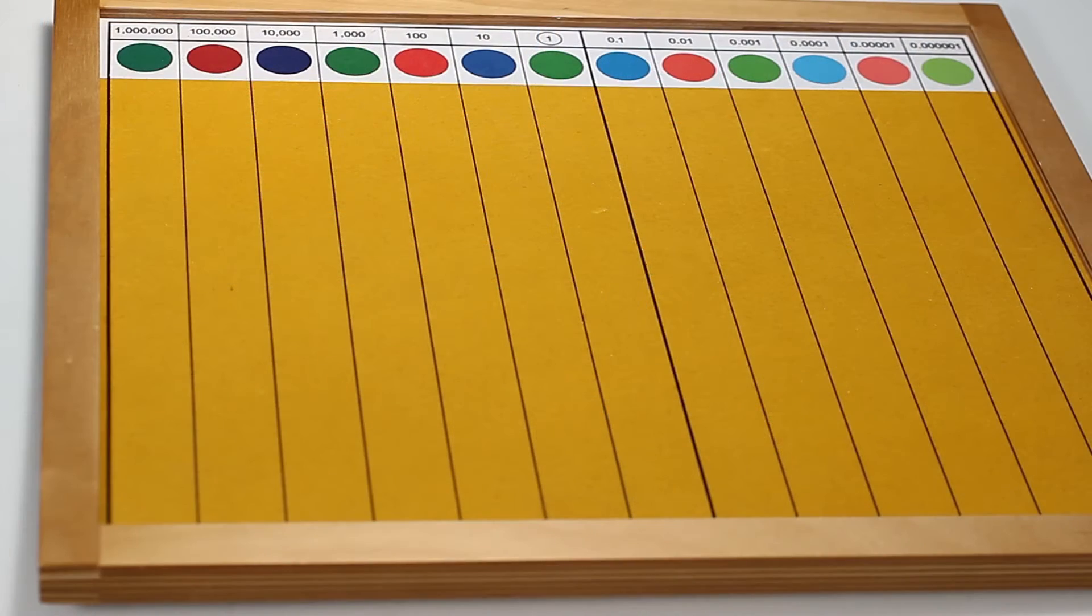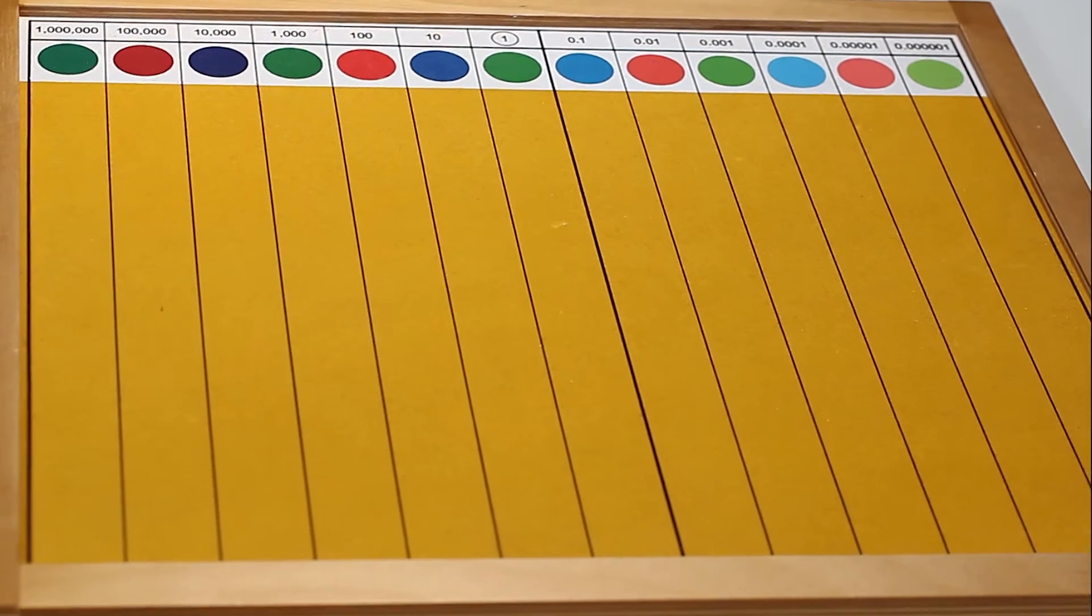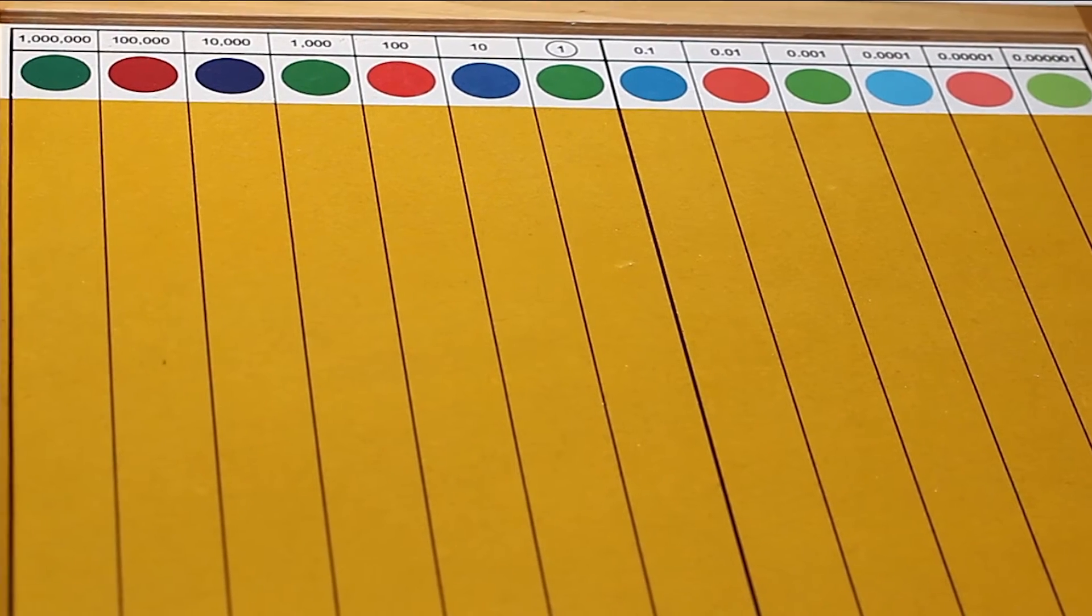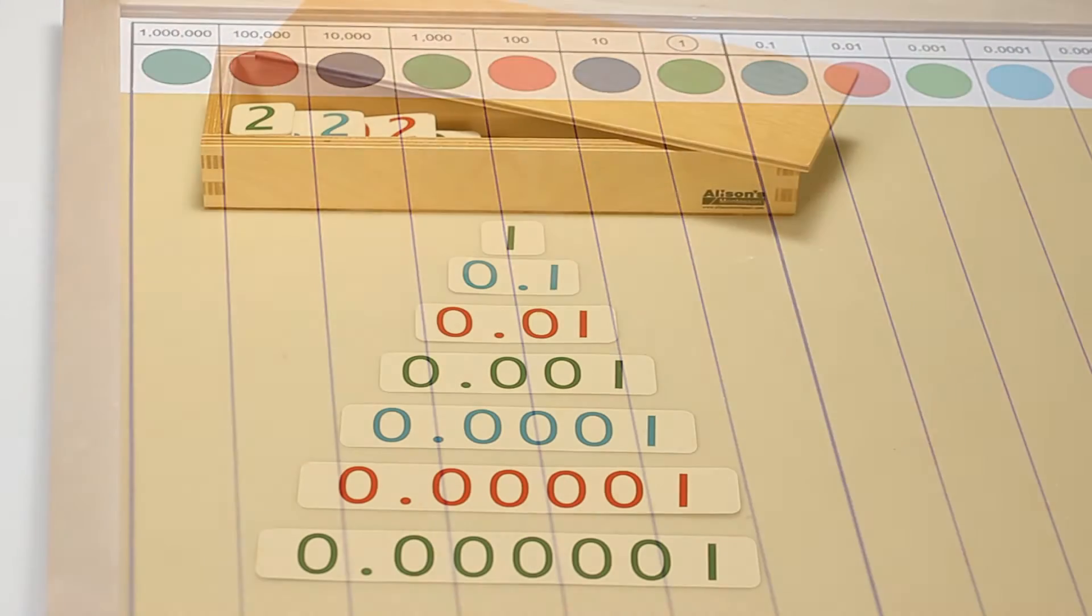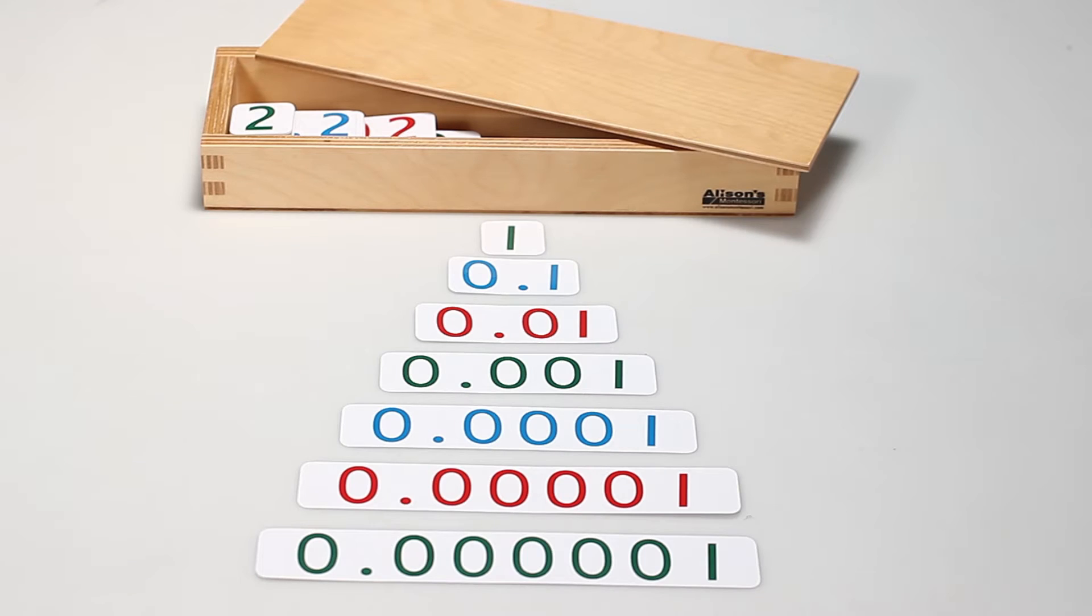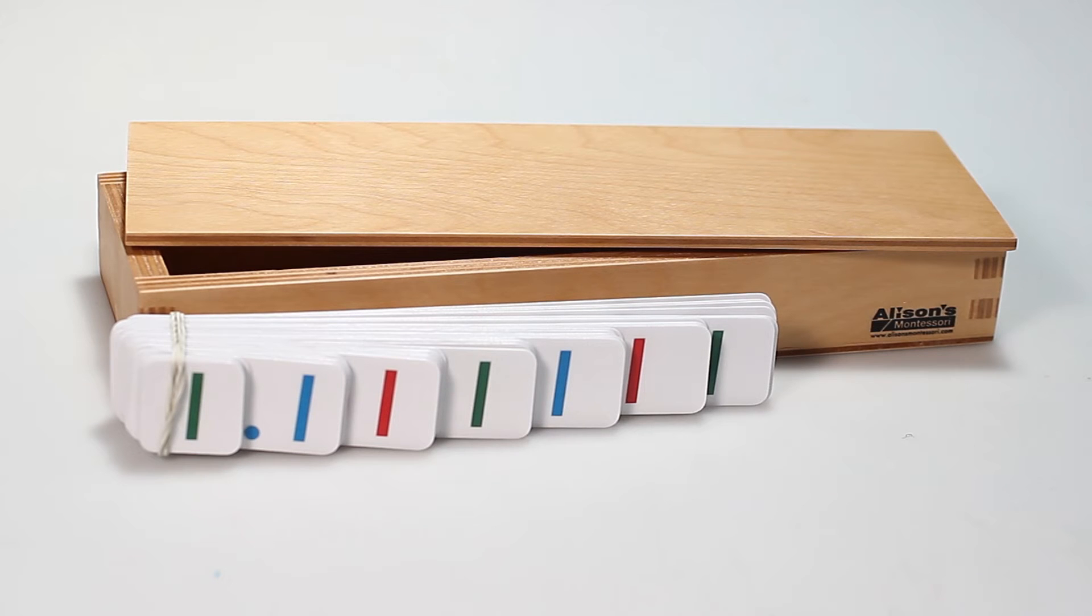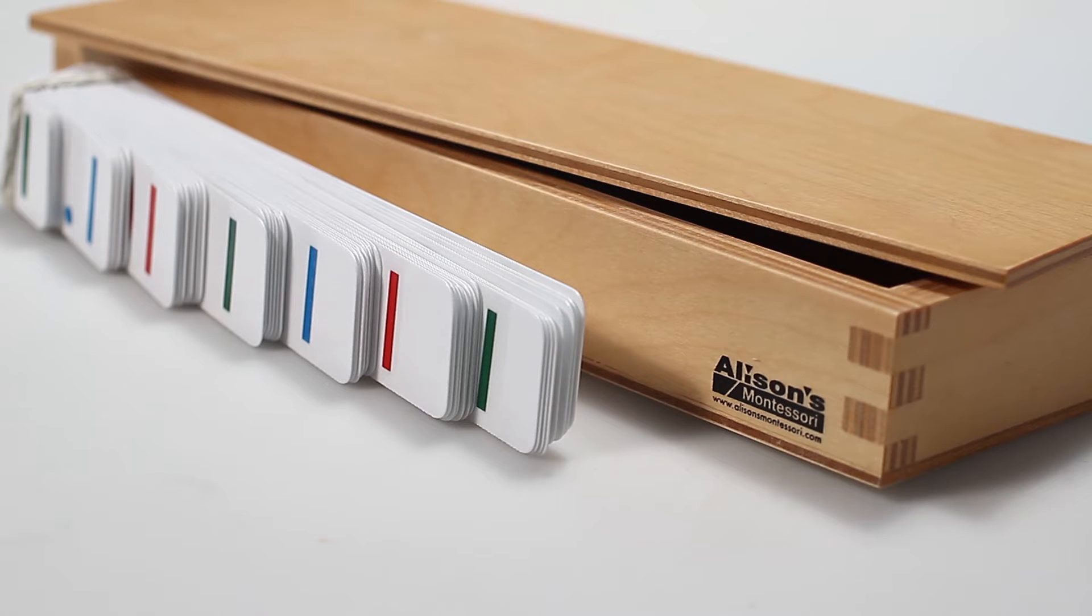The exercise comes with a decimal fraction board, which is printed on a soft cloth and laid on top of a wooden board. Along with the board is a set of fraction number cards. They are printed on thick cardstock and have high-grade lamination.